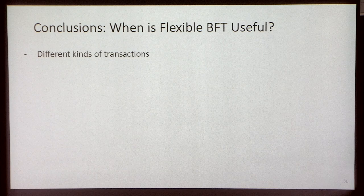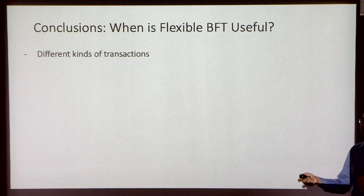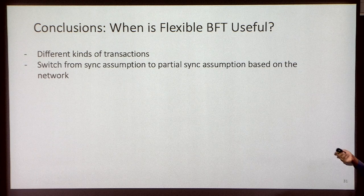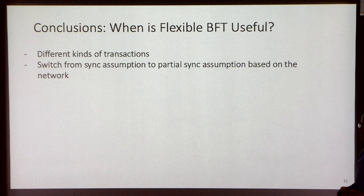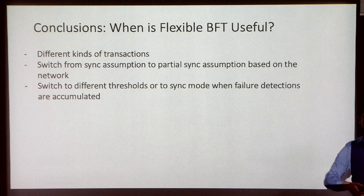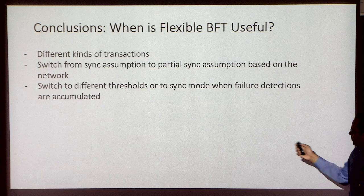To conclude, when can we use this? We can use it in different scenarios: when you have different kinds of transactions, such as a coffee transaction versus a million-dollar house transaction; when a client making a synchrony assumption knows there's a network outage and can switch to a partial synchrony assumption; or if you observe an equivocation, a client can change its beliefs to tolerate a higher number of faults because it sees an active attack in the network. Thank you — happy to take questions.